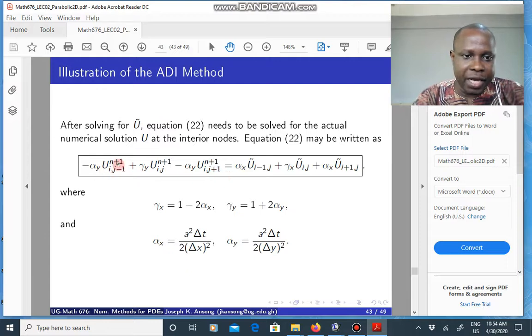On the right hand side we have our unknowns at time level n plus one. Here u tilde is known from our previous computation which we demonstrated by sweeping in the horizontal direction. This gamma y, gamma x and alpha x and alpha y are known. So these are known. That's the equation.